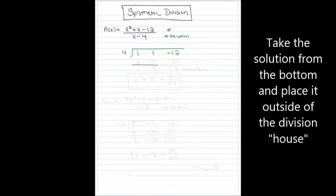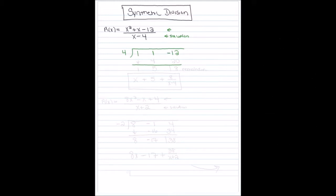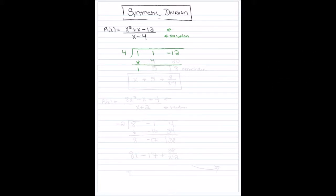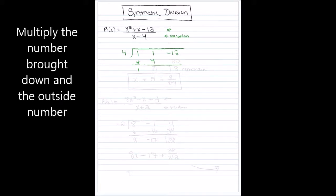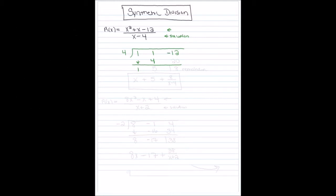The solution for the denominator — if I set the denominator equal to 0, I end up getting 4 as my solution, so I put that outside the house. Once the problem is set up, you start synthetic division by bringing down the first number, which is 1. Then multiply 1 times the solution on the outside, which is 4. One times 4 is 4. I put that 4 underneath the second column and bring the two numbers together: 1 plus 4 gives me 5.